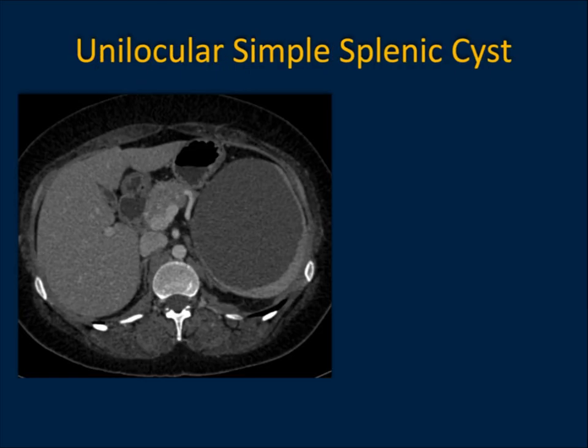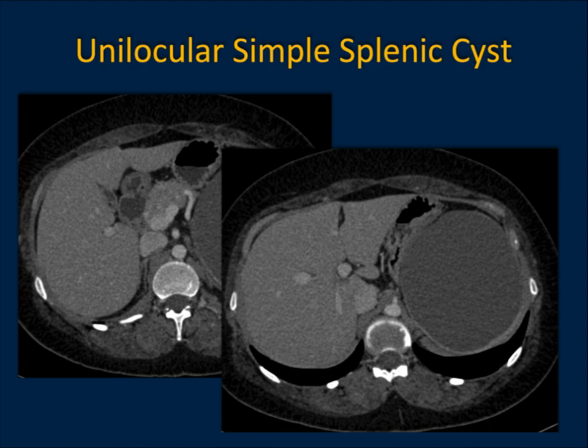Often you'll see large lesions where the patient has some vague pain, or even sometimes incidentally. This was a unilocular simple splenic cyst — water density, well-defined, sharply marginated. You can see it's having mass effect on the stomach, on the spleen, and on the diaphragm superiorly. This was resected — it's not the case that if you have a benign lesion you're not going to resect it. If lesions get large enough, they're resected because the patient becomes symptomatic.